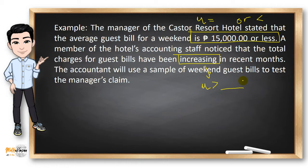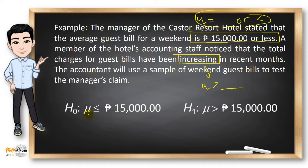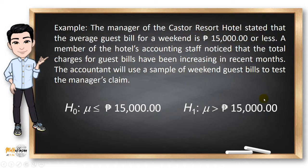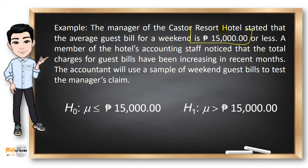So if we're trying to identify the null hypothesis, it should be this part. The null hypothesis should be written as mu less than or equal to 15,000 pesos, while the alternative hypothesis is mu greater than 15,000 pesos. I chose less than or equal to 15,000 pesos as the null hypothesis because we're just investigating if there is an increase or not. If it's just less than or equal to, there is no significant difference.